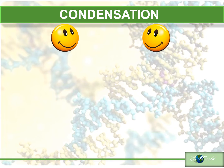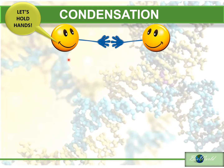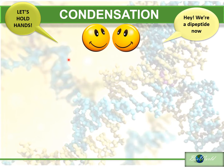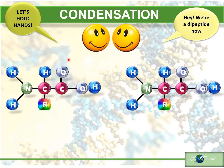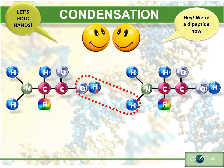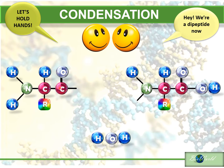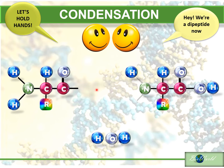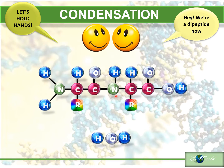For amino acids to become proteins, the first step involves condensation. When two amino acids join together they form a dipeptide molecule. Here is one amino acid with the carboxylic acid end facing the amino end of the other amino acid. An attraction will occur between the hydroxyl of one amino acid and the hydrogen of the other amino acid. This attraction will form a molecule of water, and the carbon of one amino acid will now form a bond with the nitrogen of the other amino acid.